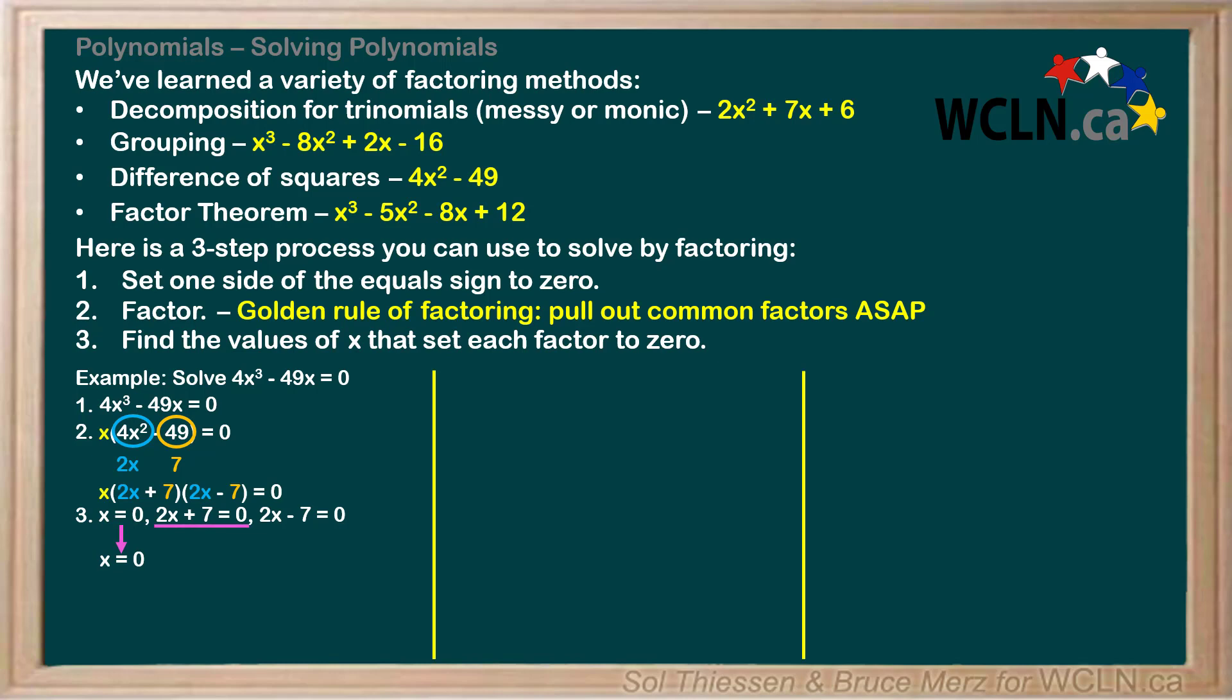Next, we'll look at the factor of 2x + 7. Subtracting 7 from both sides gives us 2x = -7, then dividing both sides by 2 gives us x = -7/2. Finally, we'll look at the factor of 2x - 7. Adding 7 to both sides gives us 2x = 7, then dividing both sides by 2 gives us x = 7/2. These three values of x are all the solutions to this equation.